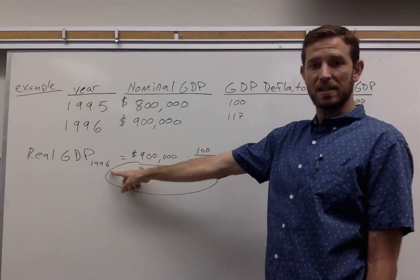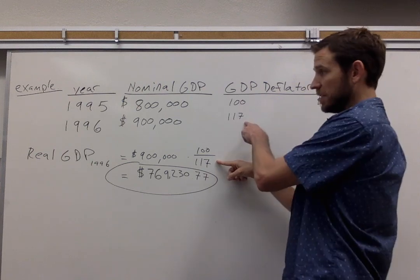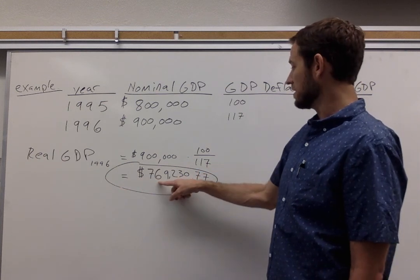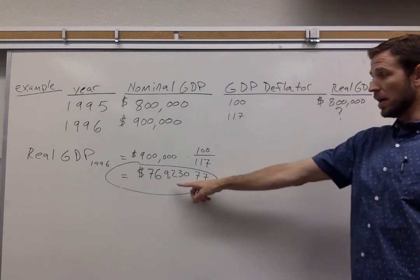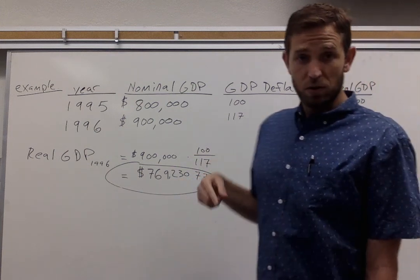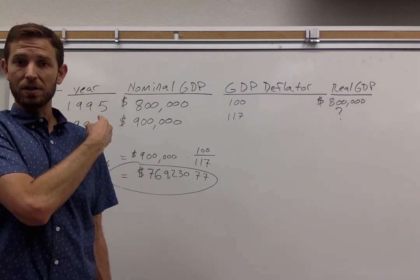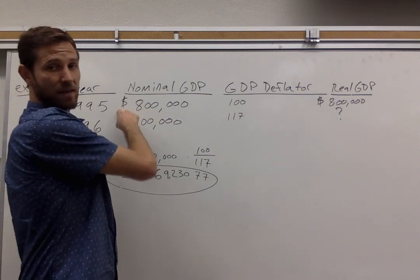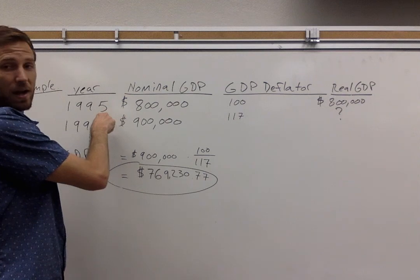Real GDP for 1996 is going to be equal to whatever the nominal GDP was in that year, multiplied by 100, divided by the price index of 117 in that particular year. And that gives us the real GDP for 1996. You can see that real GDP has in fact gone down from $800,000 in 1995 to just over $700,000 in 1996. This real GDP figure shows you the value of all the production that took place in that particular year, but assuming the prices that existed were the same prices from the base year — 1995. So real GDP here shows us how much stuff got produced, assuming we were using the price level that existed back in 1995.